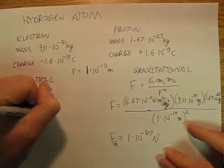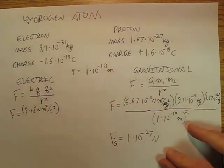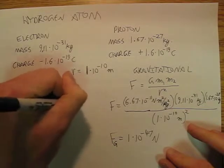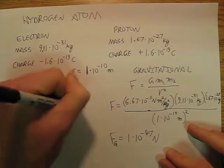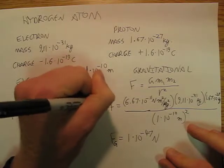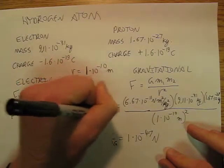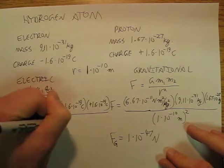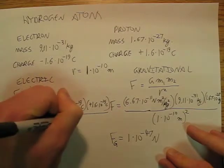I'm sorry, newton meter squared per coulomb squared. And then we've got negative 1.6 times 10 to the negative 19th coulombs, positive 1.6 times 10 to the negative 19th coulombs, all over the same thing, 1 times 10 to the negative 10th meters squared.